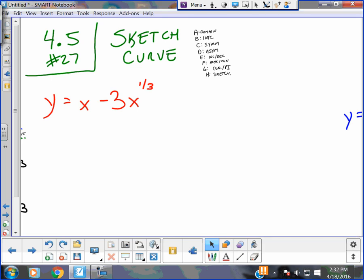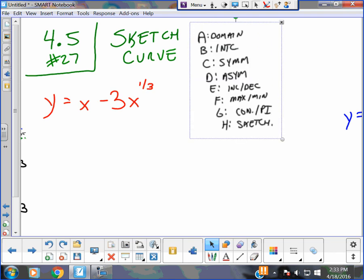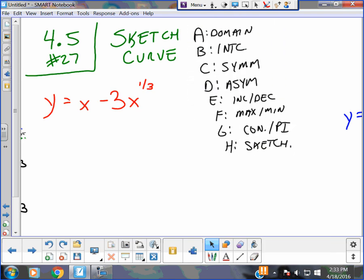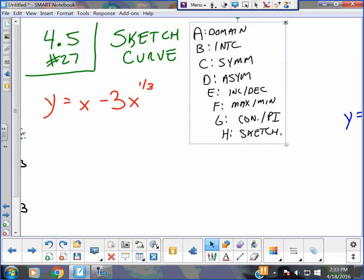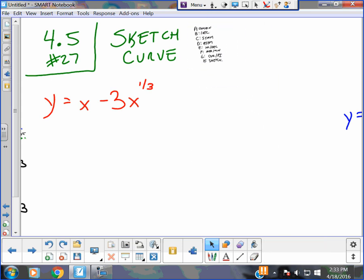So, the big thing is we want to calculate, no calculator, because a calculator would give you this problem completely. It would be sectioned to parts like A through H where sketching is just one little portion. The actual sketch would not be that important compared to the domain, intercepts, symmetry, asymptotes, increasing, decreasing, maximum, concavity, points of inflection and sketching. A through G would be worth quite a few points.